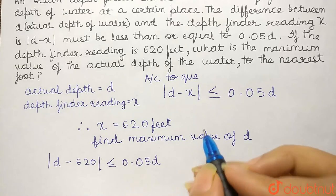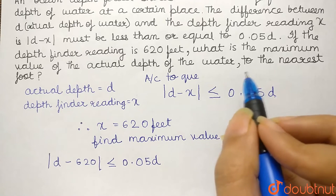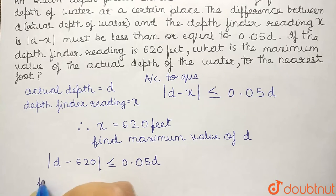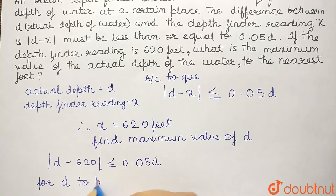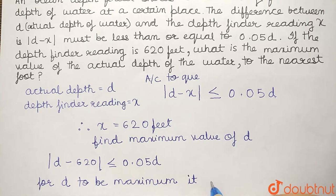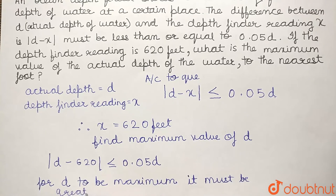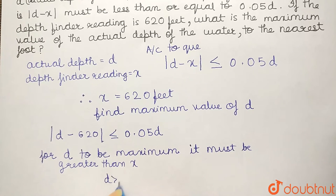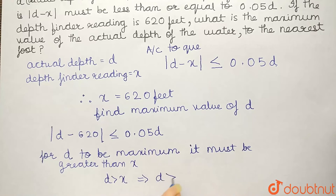Now, in the question, it has been mentioned that we have to find the maximum value or the highest possible value of D. For D to be maximum, it must be greater than 620 or X. That is, for D to be maximum, D should be greater than the value of X, i.e. D should be greater than 620.